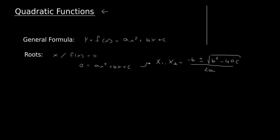So when we plot a quadratic function it has a u-shape. Here we can see the two roots, which will be called x1 and x2. A quadratic function can also be placed over the x-axis, and in this case it will only have one root, x1, which will equal x2.